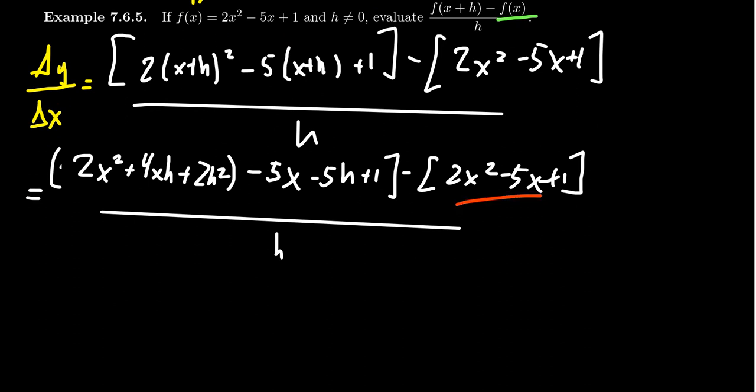Everything in the f of x portion will cancel with something in the f of x plus h portion. I have to go on an Easter egg hunt right now. So I need a 2x². Here's a 2x². So they're going to cancel out. I need a -5x. Here's my -5x. They're going to cancel out. Why are they canceling? Because I'm subtracting them. And then you have a plus 1 that's going to cancel with the plus 1. So those are gone. And then you're going to notice what did not get canceled. We get a 4xh, we get a 2h², and we get a -5h.